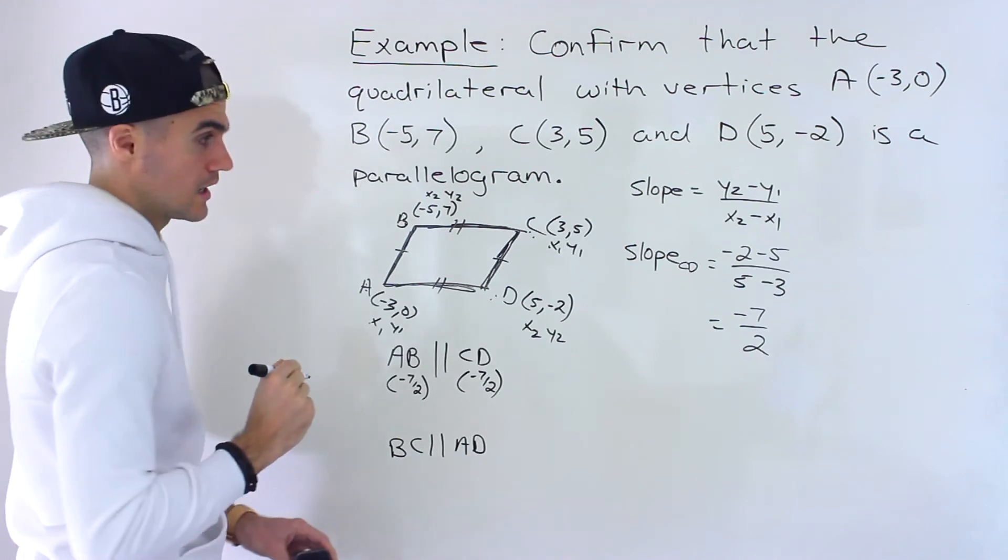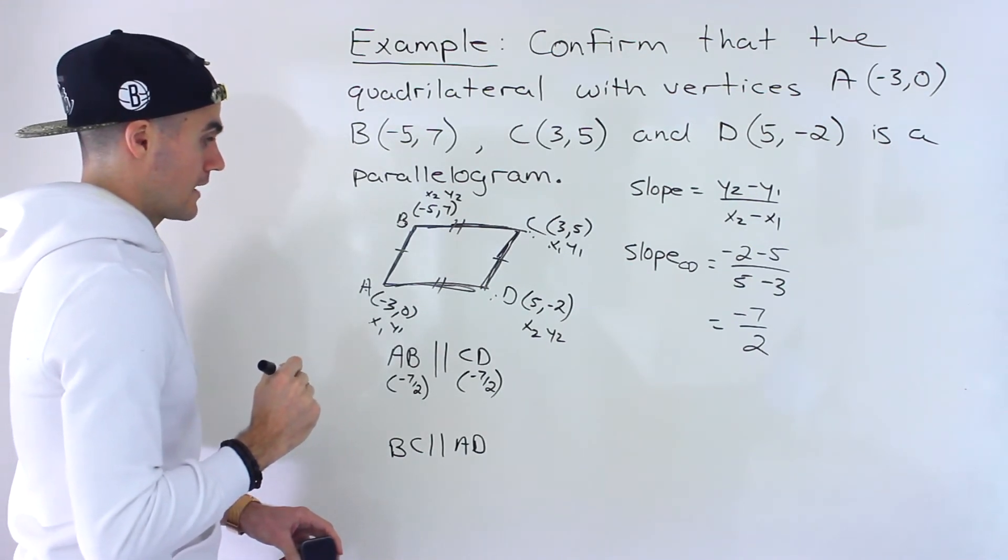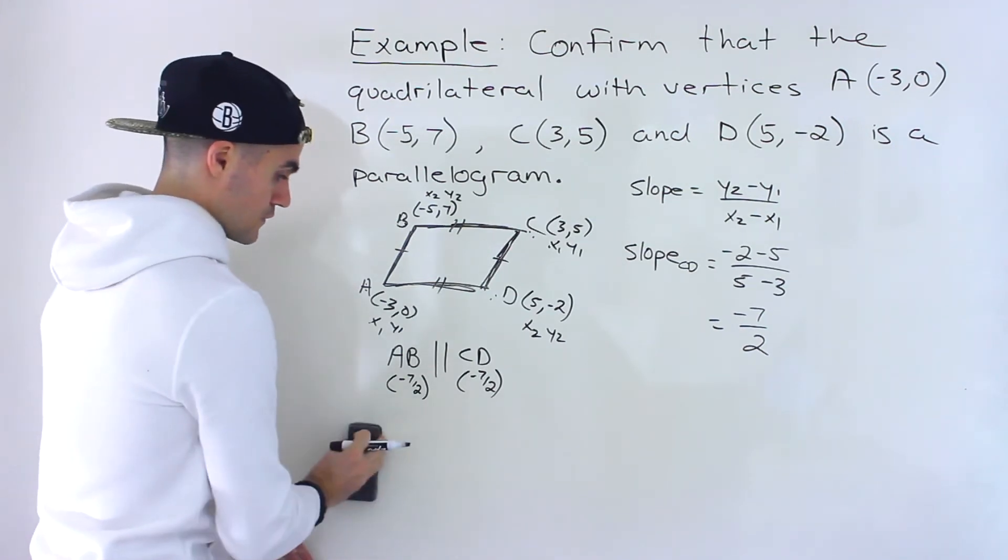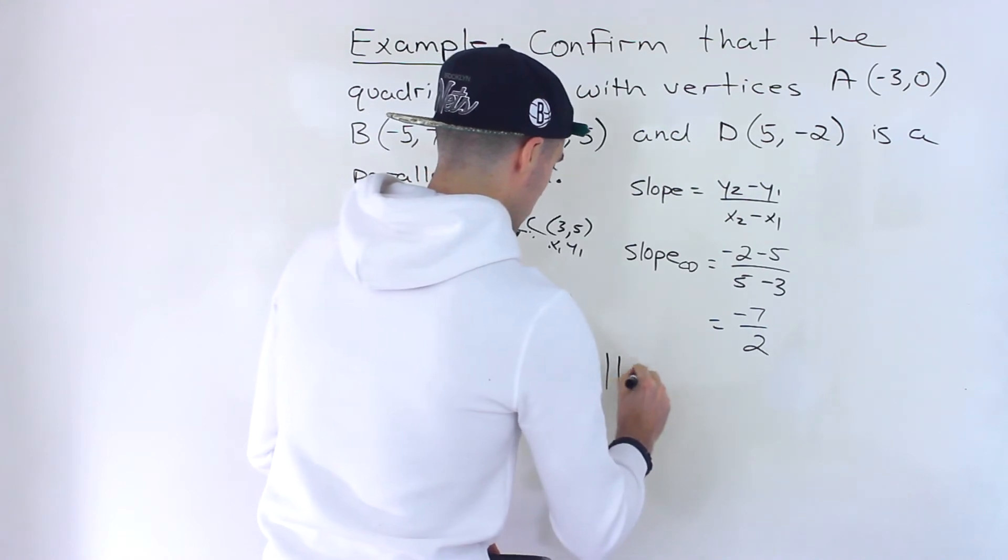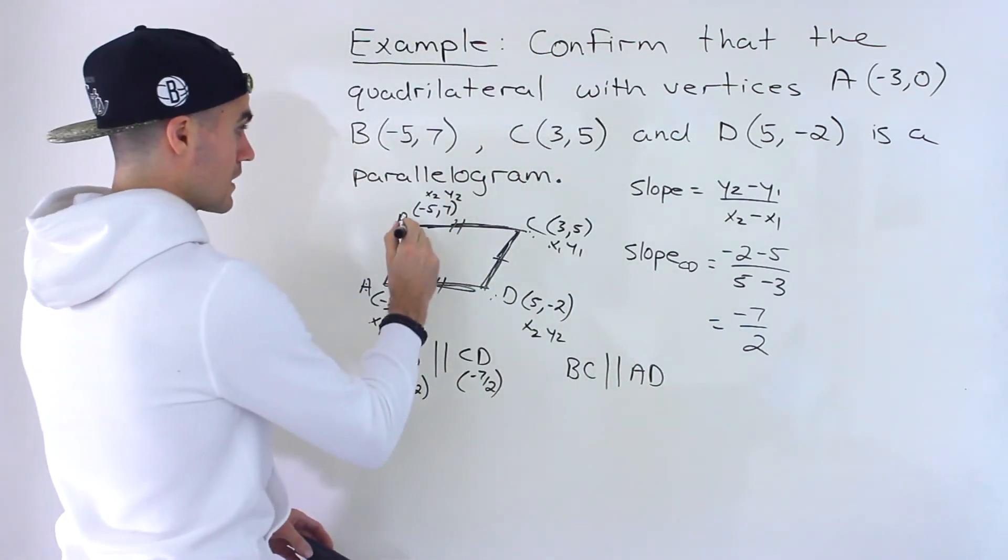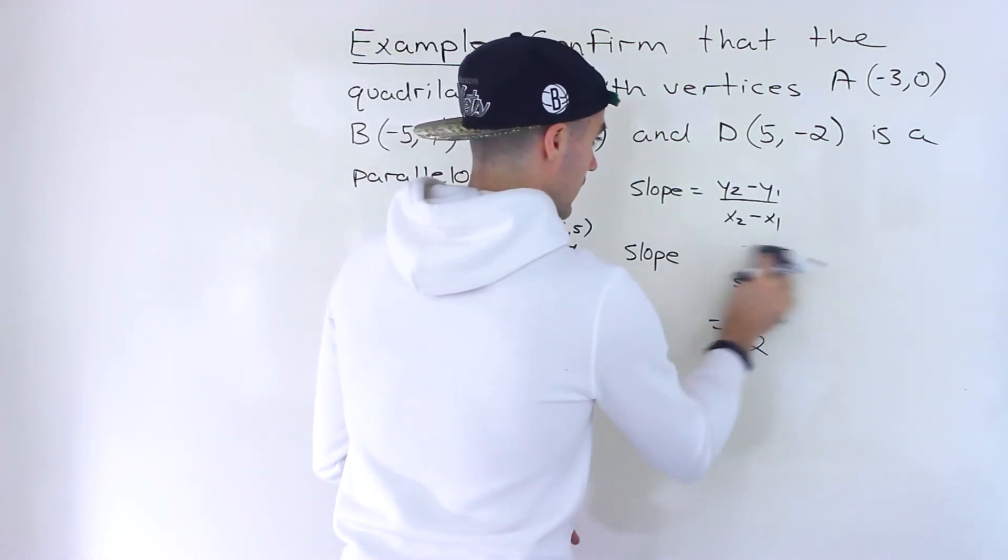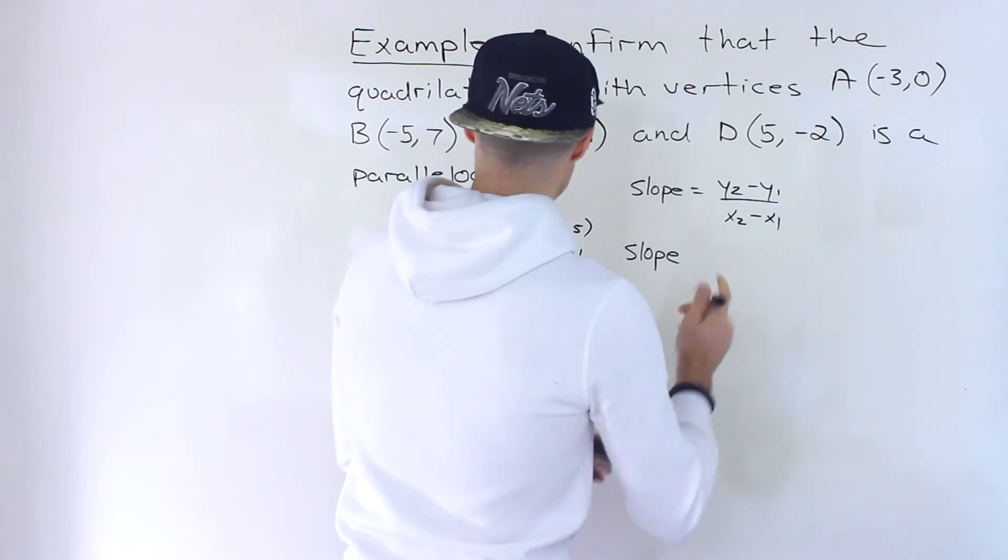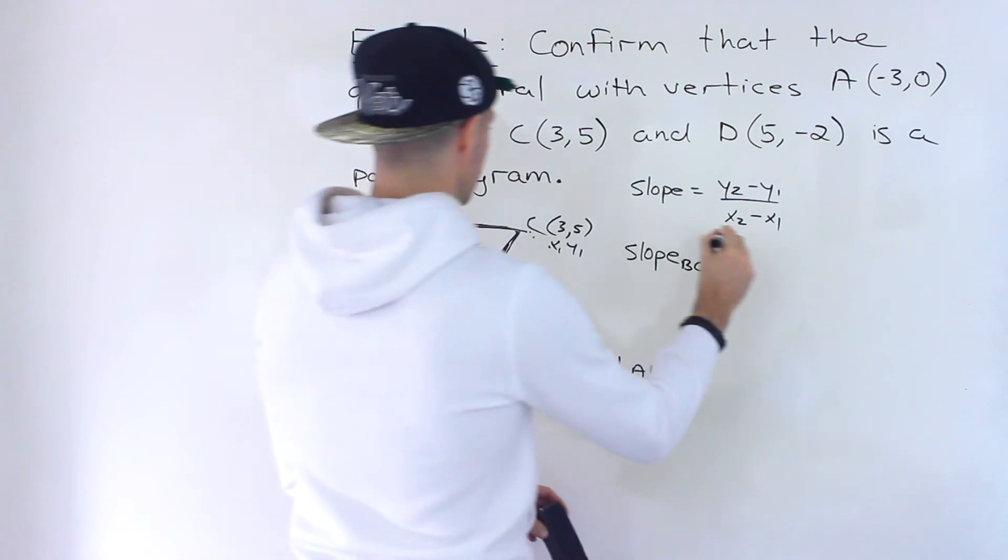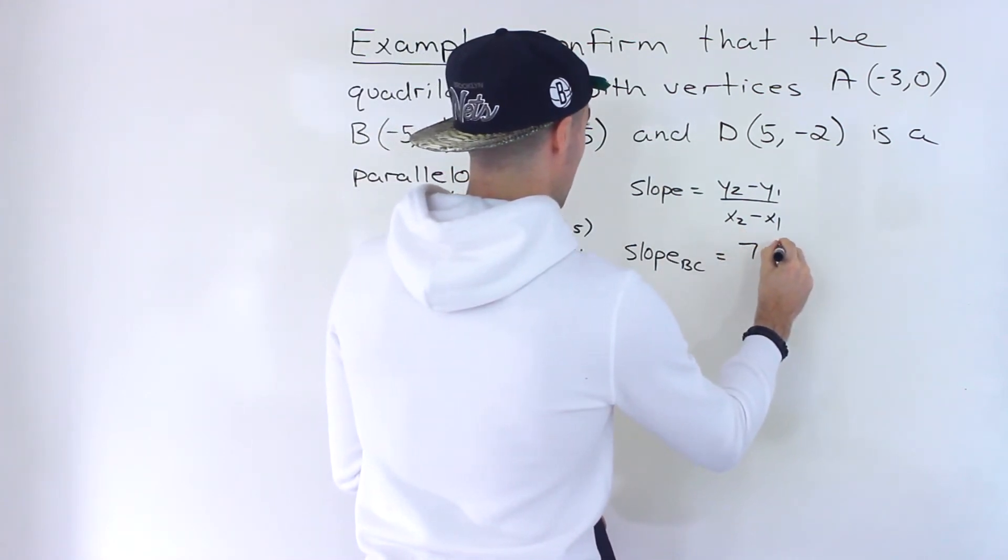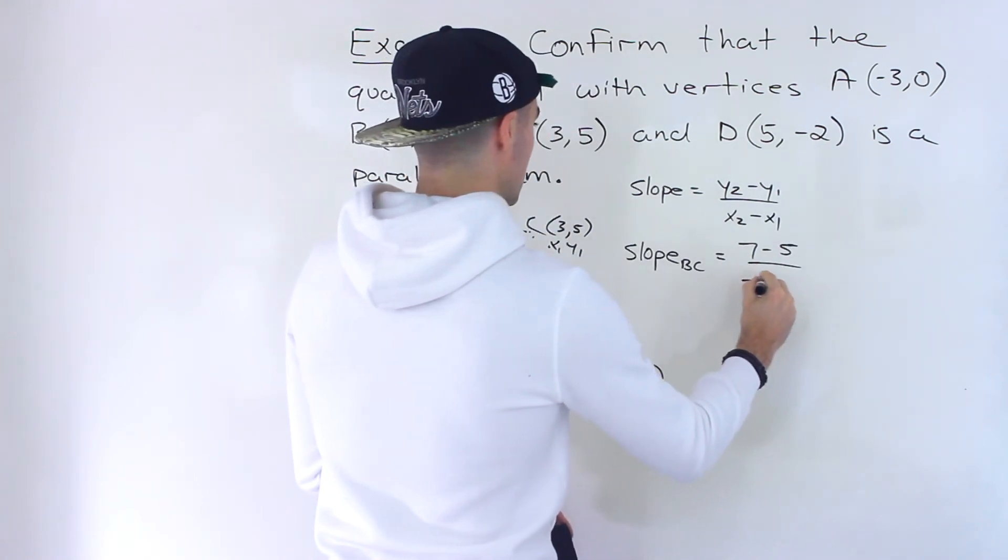All right, so we're halfway done in confirming that this is a parallelogram. And then we have to find the slope of BC right here. And these are already labeled X1, Y1, X2, Y2. So we'll have Y2, 7 minus Y1 which is 5, over X2 which is -5 minus X1 which is 3 like that.